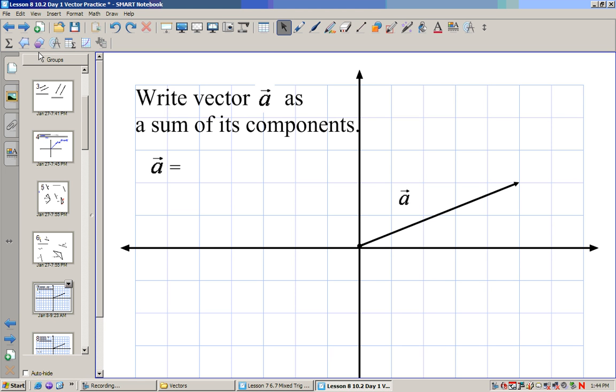Now let's go back to writing in terms of our components. This will help us out. A little review. So we have 1, 2, 3, 4, 5 i's. This is 2j. So we can write a as 5i plus 2j.